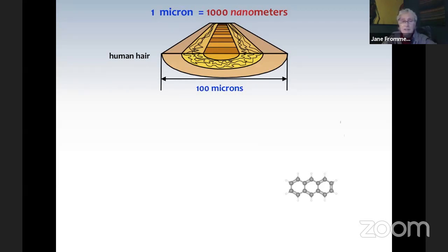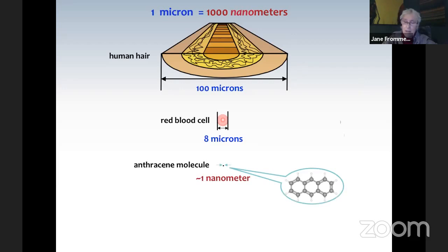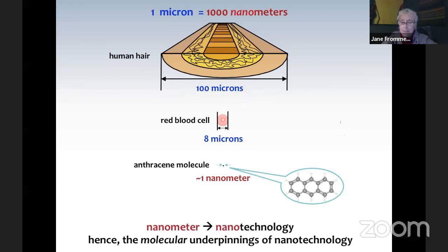Let's relate it to objects that you do know. Human hair is about a hundred microns across and a blood cell is about a tenth of that, around eight microns across. We're still 8,000 times bigger than a nanometer. What is on the nanometer scale? In fact, molecules are. What's pictured here is an anthracene molecule and that's about a nanometer across. So when we talk about nanotechnology, we're talking about a ruler that uses the length scale of molecules to measure distances.